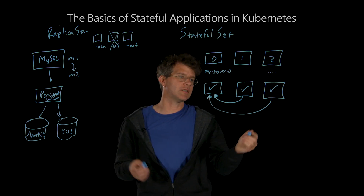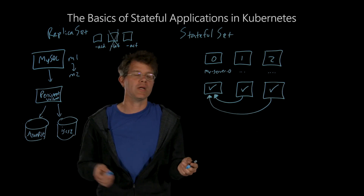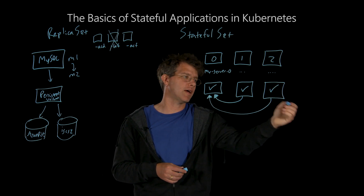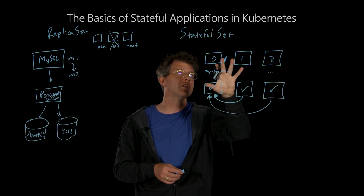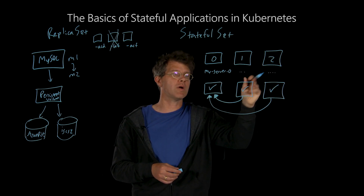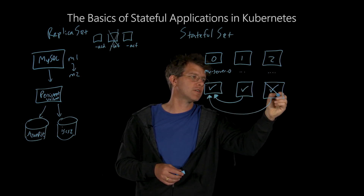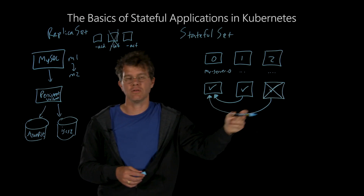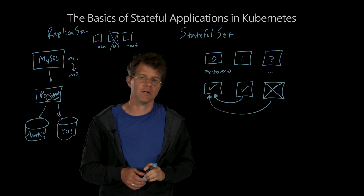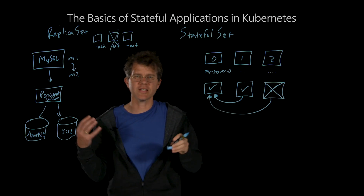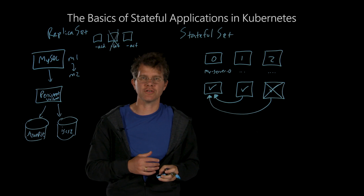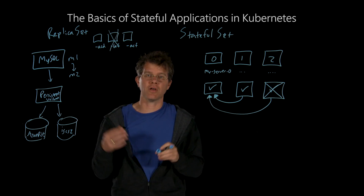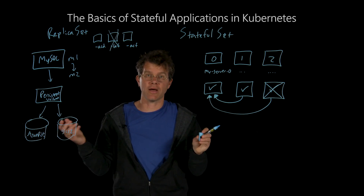Likewise, when you scale down, Kubernetes will also delete starting at the highest index. So if you scale from three replicas to two replicas, it's going to start by deleting replica index 2. This again makes it easier to control the way that an application behaves on a scale-down event.